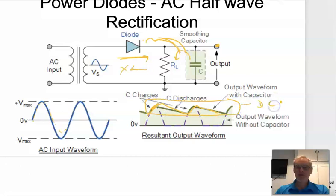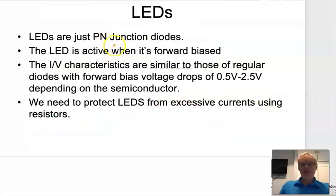LEDs are just forms of PN junctions. The LED is active when it's forward biased—that's how we use them. The IV characteristics—what I mean by that is the current-voltage characteristics, that type of curve—is similar to a standard diode.